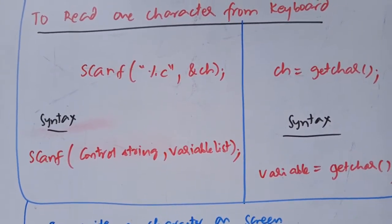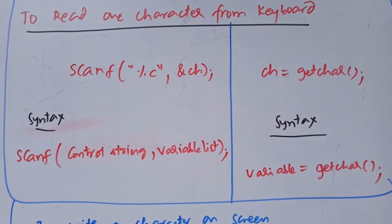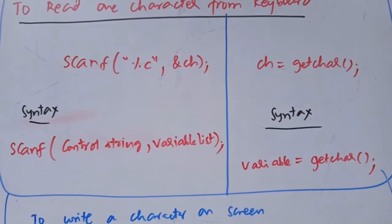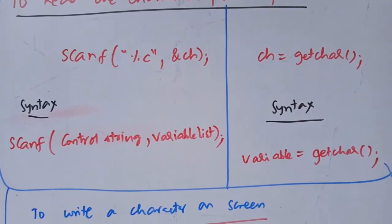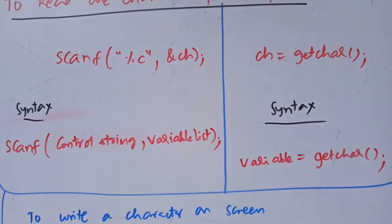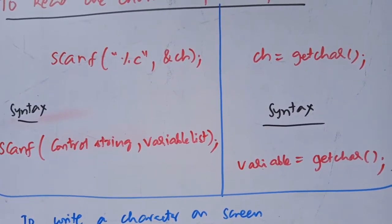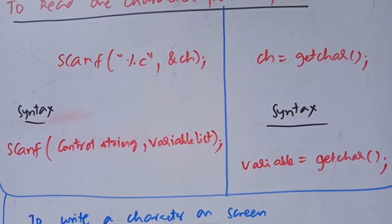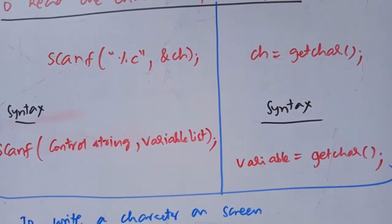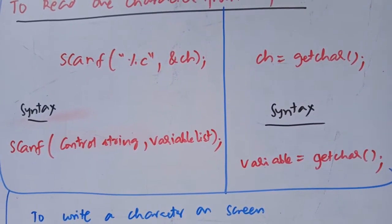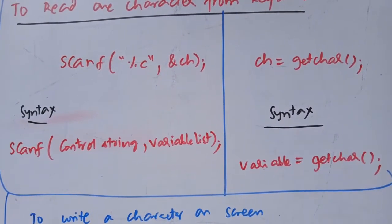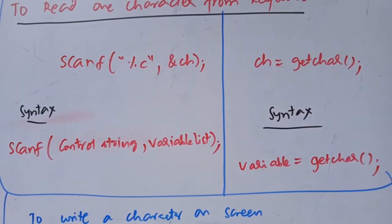Scanf syntax uses %c, %d, and %f inside double quotations as a control string, followed by a variable list using the ampersand symbol. We can use these format specifications for character, integer, and float data types.